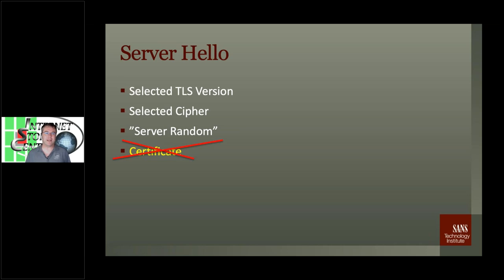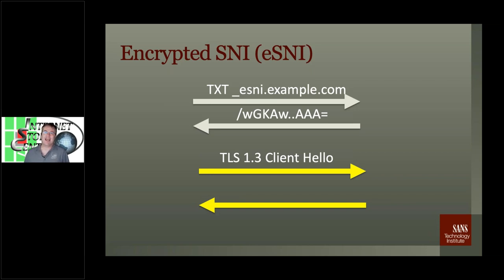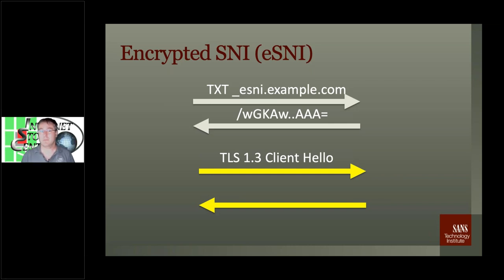The certificate went away from the Server Hello. We still have our ciphers and TLS version so we can still do some fingerprinting, but we no longer have the certificate. In the Client Hello we have the Server Name Indicator. There's actually a way to encrypt the Server Name Indicator as well. This is not yet widely implemented, and there's a bit of a catch-22: where do I get a key to encrypt that Client Hello? That's the first packet I'm sending, and I've never talked to you before.